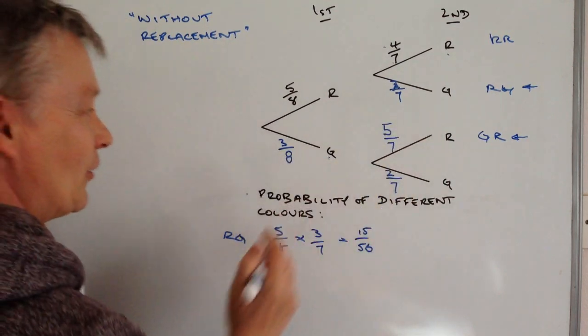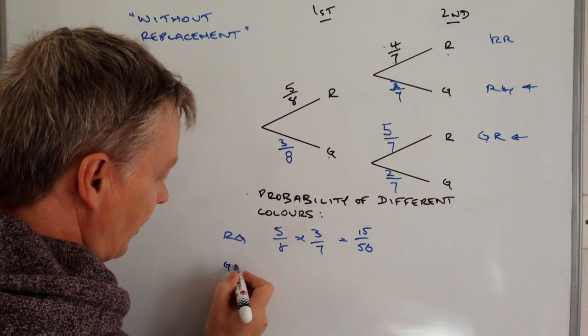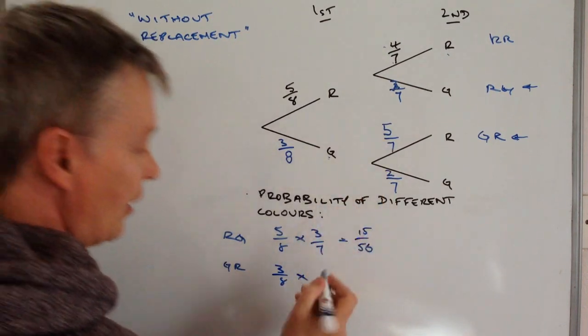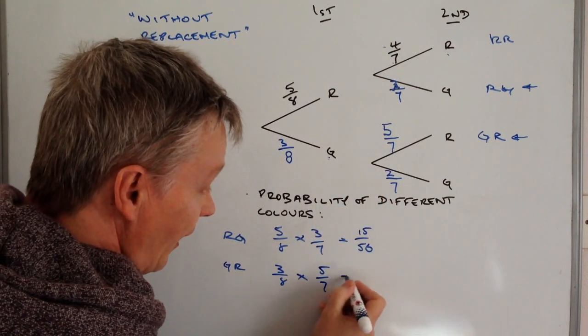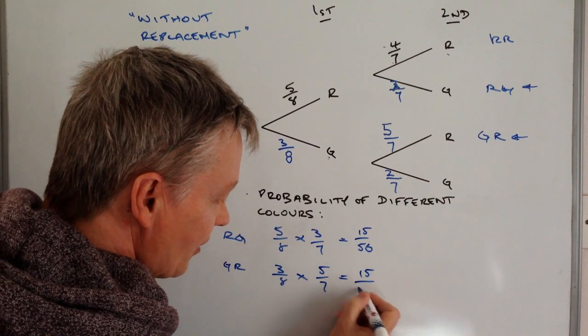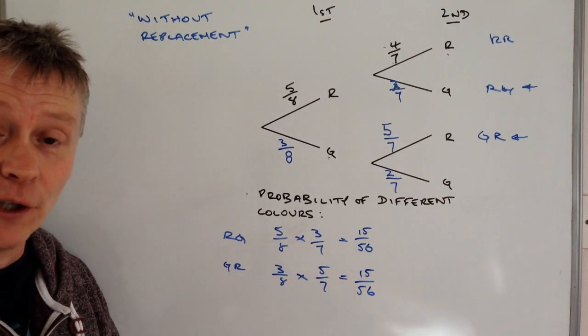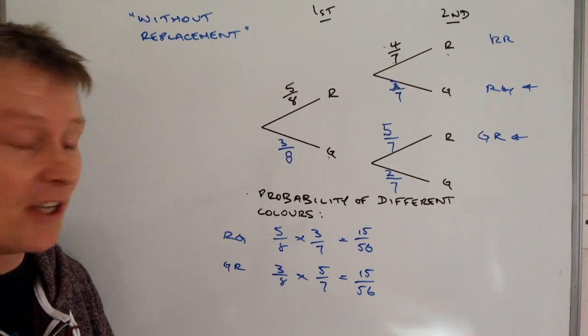Okay let's have a look at green red. Well you've got green red 3/8 multiplied by 5/7 and actually it's exactly the same, which is kind of handy, because if we now look at the combined probabilities we add those two together.